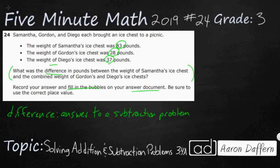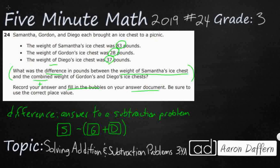The question asks for the difference in pounds between the weight of Samantha's chest and the combined weight of Gordon's and Diego's chests. When we combine things, that means we need to add. So this is a two-step problem: I'll represent Samantha's chest in a box, then subtract the combined weight of Gordon and Diego — shown in parentheses, which means do that part first. Add Gordon and Diego first, then subtract from Samantha.